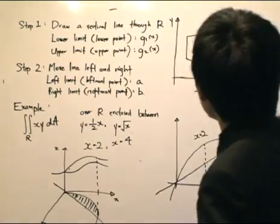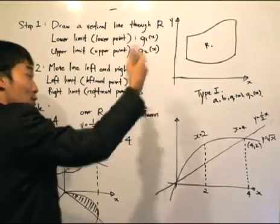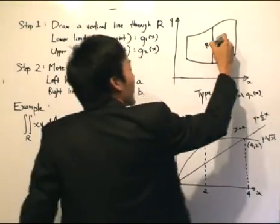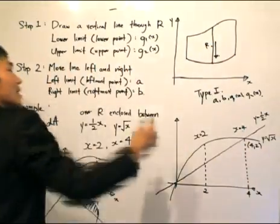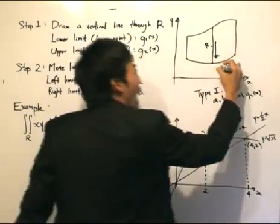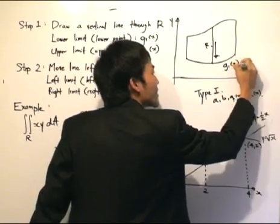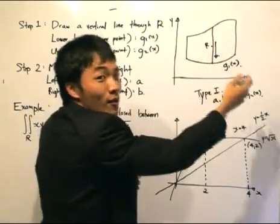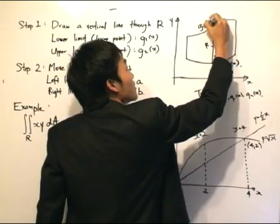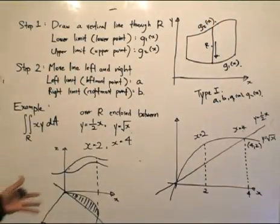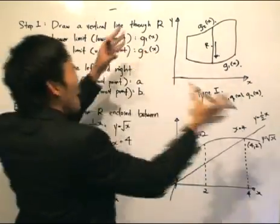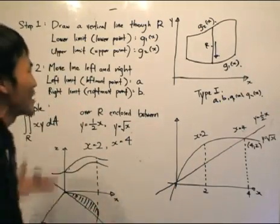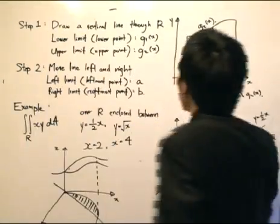Here's how we're going to do it. Firstly, we draw a vertical line through R — it's type 1, so we draw a vertical line through R. We pick any point along that line. Going down, where it reaches a certain boundary, that is going to be our curve G1 in terms of X. We go up the line, reach the other boundary, and that is going to be G2 in terms of X. These functions will be given, and they shape up the region R.